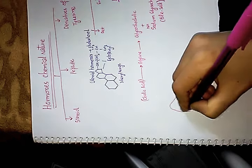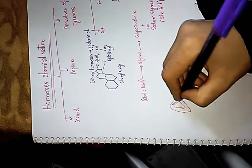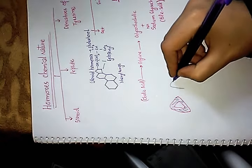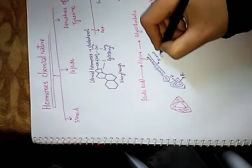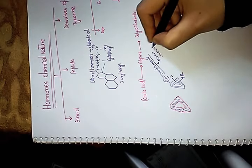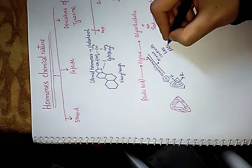Another function of cholesterol is its use by the adrenal cortex. The adrenal cortex has three layers: zona glomerulosa, zona fasciculata, and zona reticularis. Zona glomerulosa secretes mineralocorticoids, such as aldosterone — a life-saving hormone.